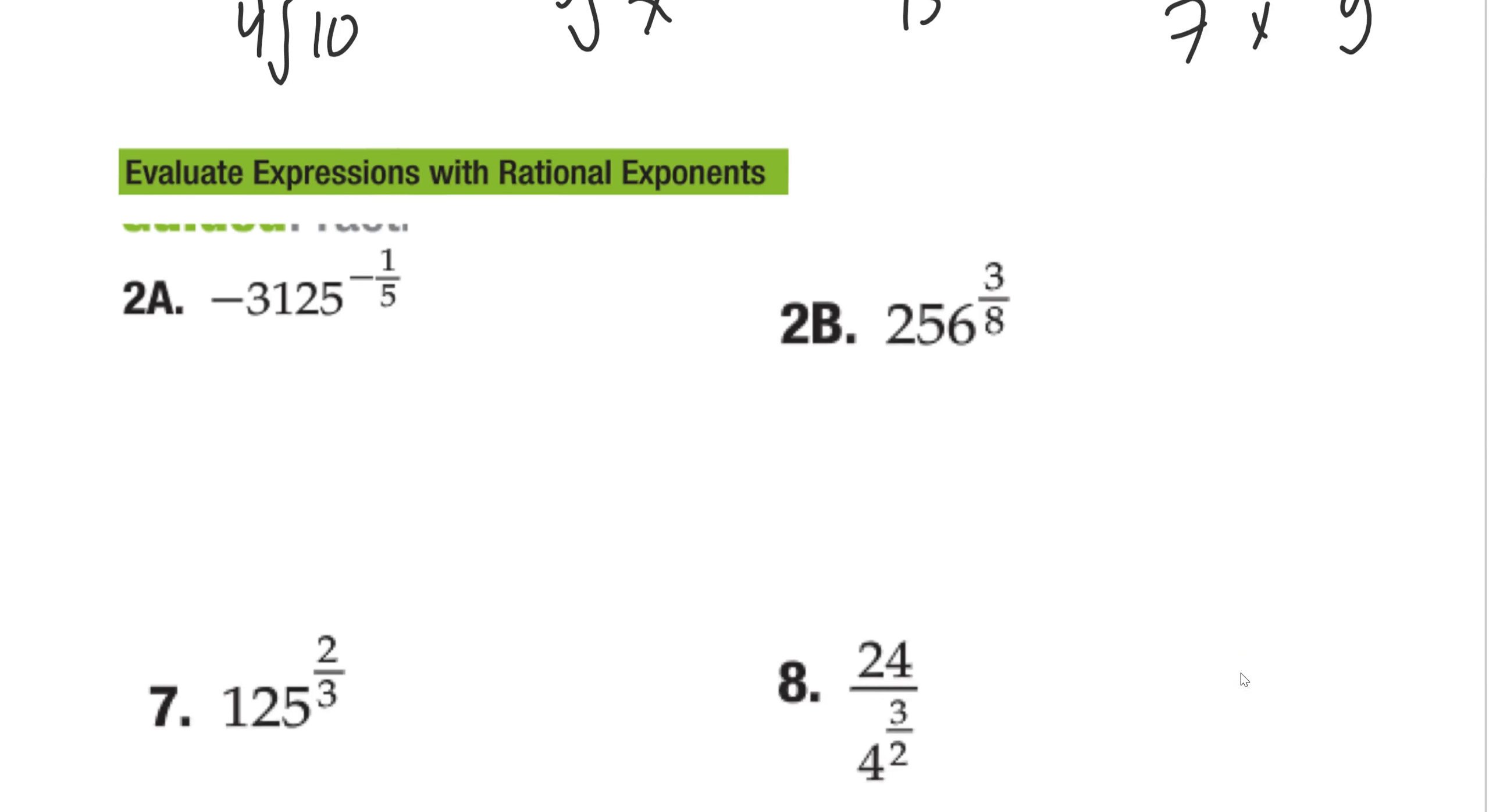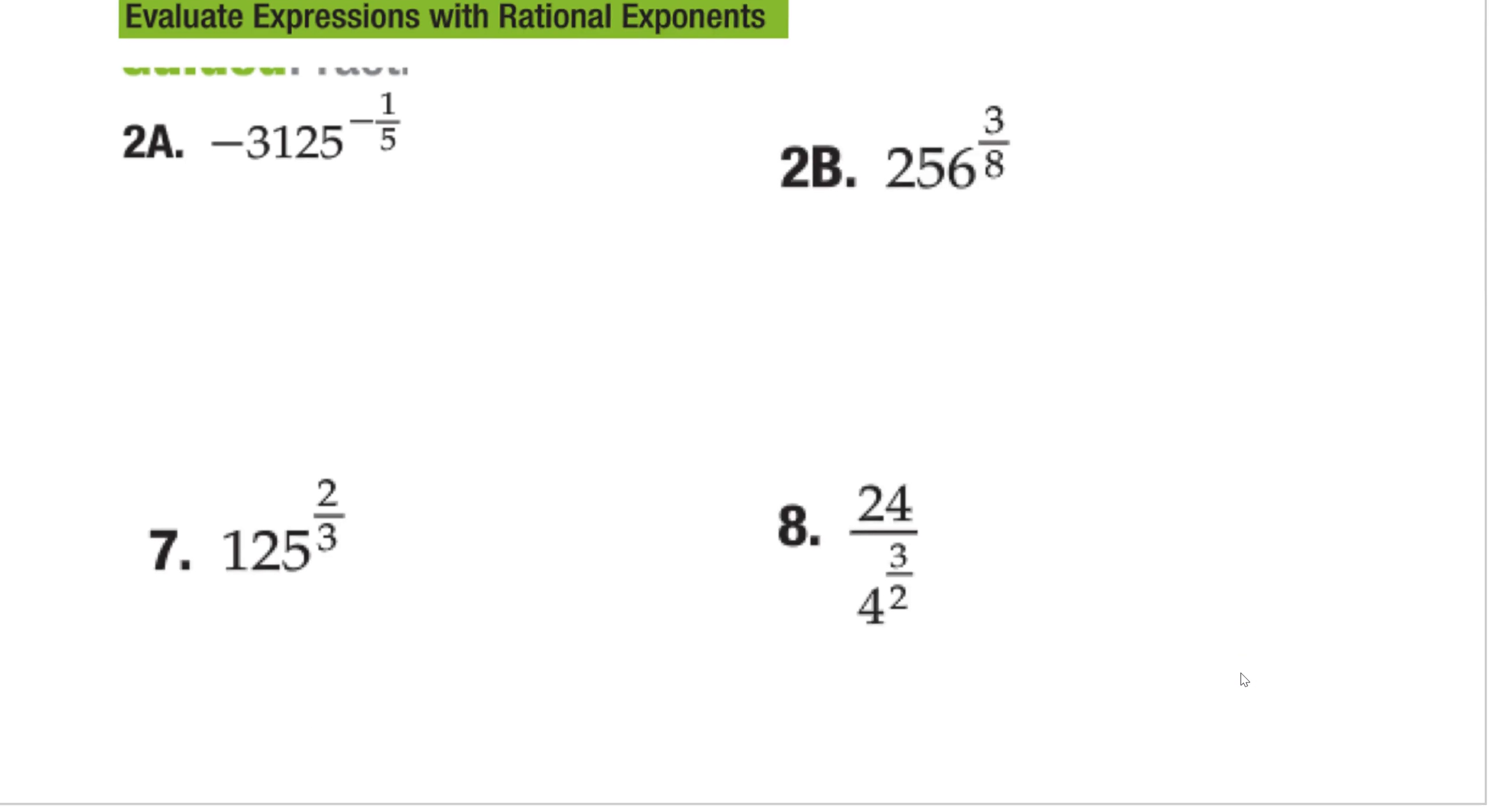Now let's evaluate some expressions. So this first one, remember what a negative power does. Negative power flips it. Now it doesn't flip the rational, it flips the base. So it's going to be, and again, we're talking about the negative here. It's going to be 1 over negative 3125 to the 1 fifth. Right, so negative power flips the base.